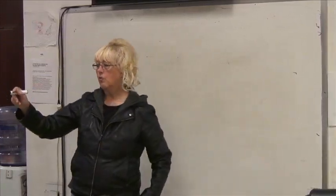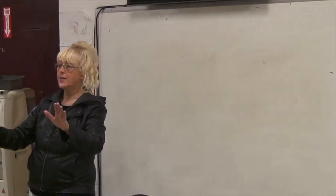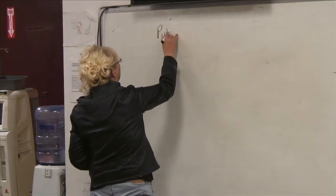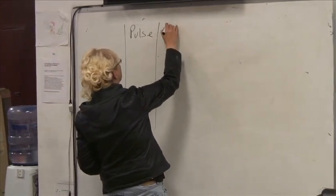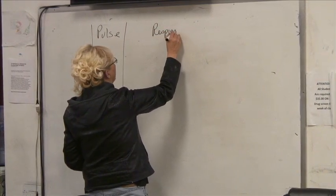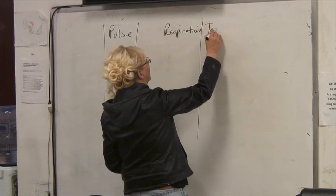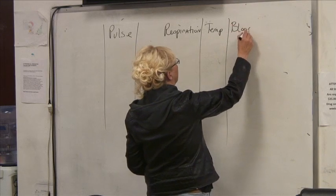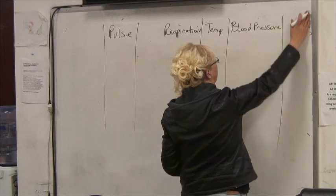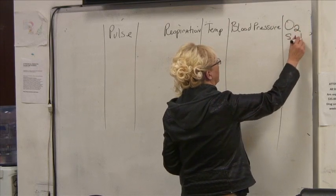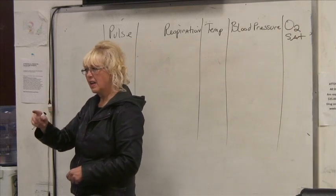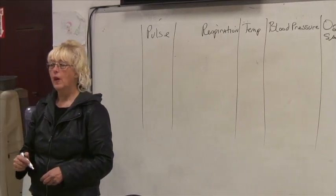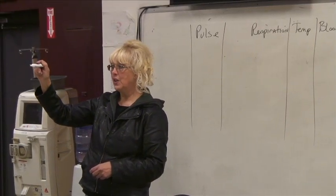All of you should know vital signs. We need to know the parameters: pulse, respiration, temperature, blood pressure, and O2 saturation — the last being typically a nursing assessment. When you go to the ER and they put that clip on your finger, it measures your O2 saturation, which is based on the oxygen within your hemoglobin.